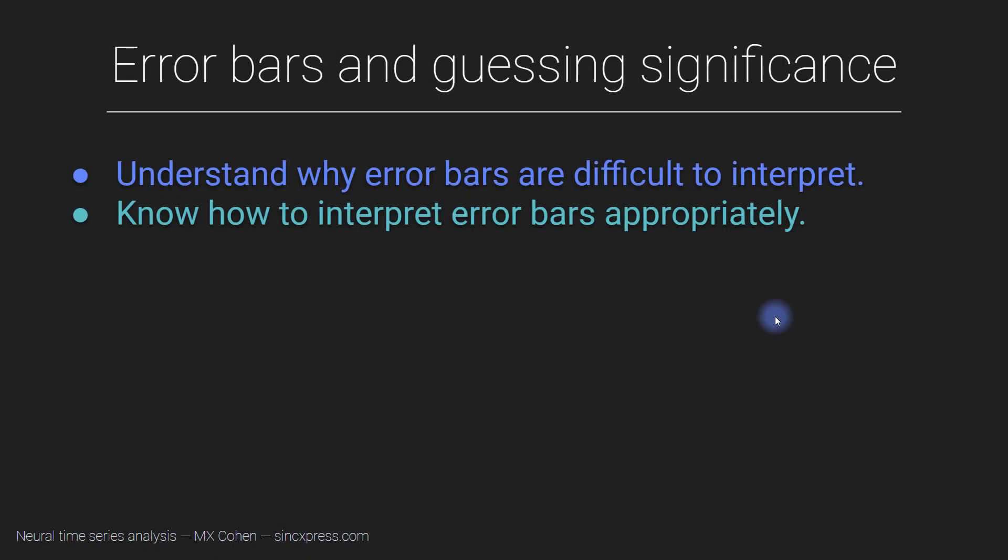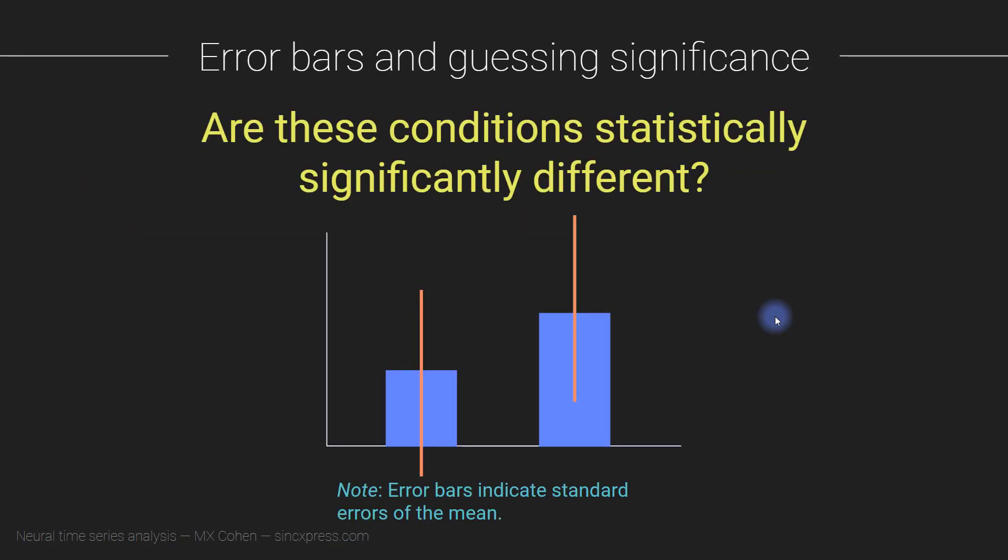Let's talk about error bars and inferring statistical significance based on error bars. So here is a question. We have data here with bars and error bars. The note underneath the figure tells us that these error bars indicate the standard errors of the mean.